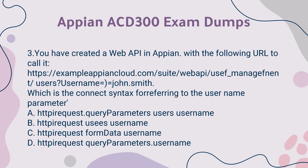Question 3: You have created a Web API in Appian with the following URL to call it: https://example.appiancloud.com/suite/webapi/yusuf_managefnint/users?username=john.smith. Which is the correct syntax for referring to the username parameter?